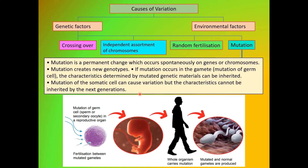But if the mutations occur in somatic cells, they can cause variations, but the characteristics cannot be inherited by the next generation. We will learn more about mutations in the next subtopic, 12.3. This diagram shows how mutations occur.